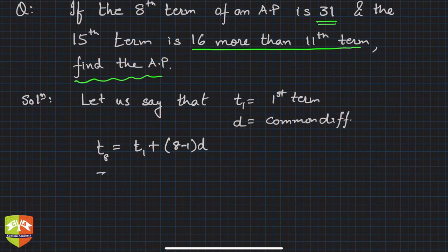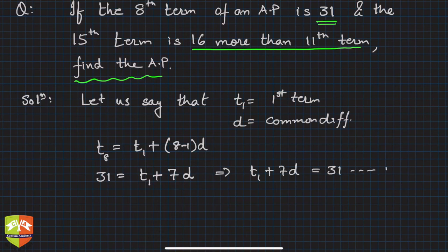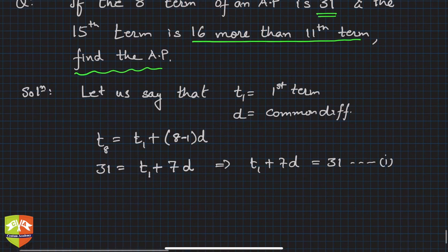And this is d. So this is the first equation we got: t₁ + 7d. Or we can rearrange so that it becomes easier for us to solve later on. So this implies t₁ + 7d = 31. Let it be equation number 1.